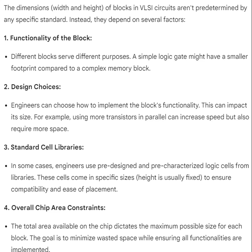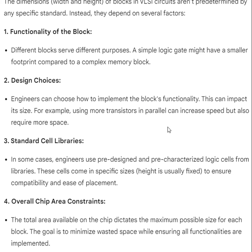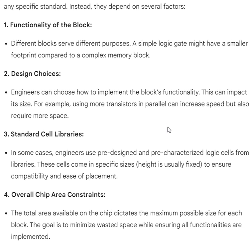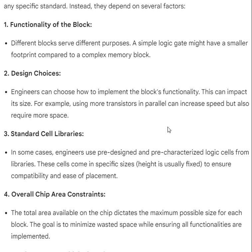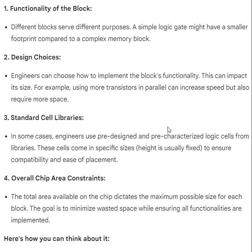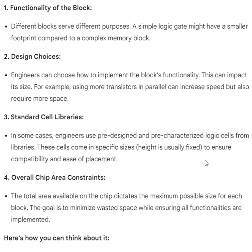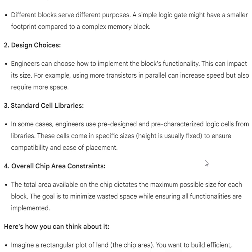Second, design choices: engineers can choose how to implement the block's functionality, which can impact its size. For example, using more transistors in parallel can increase speed but also requires more space. Third, standard cell libraries: in some cases, engineers use pre-designed and pre-characterized logic cells from libraries. These cells come in specific sizes — height is usually fixed to ensure compatibility and ease of placement.